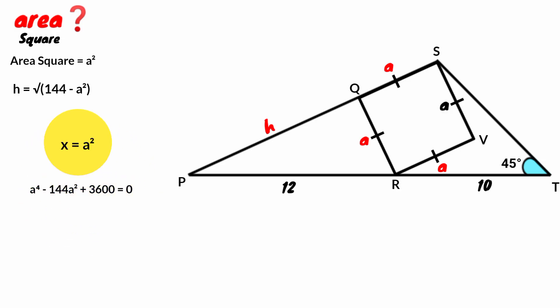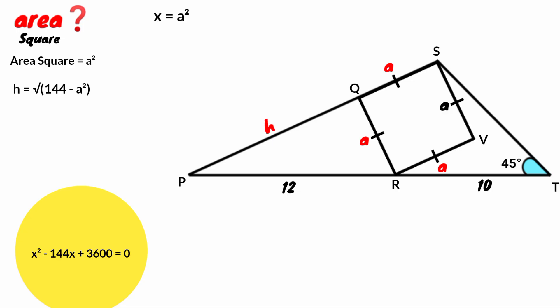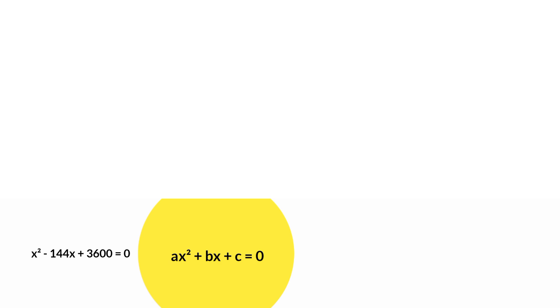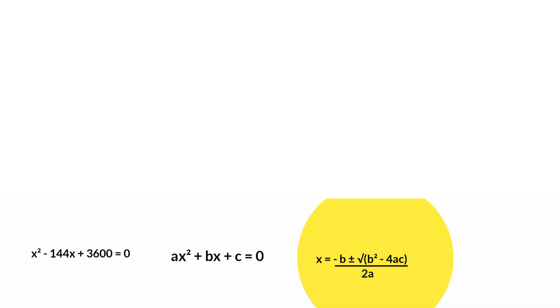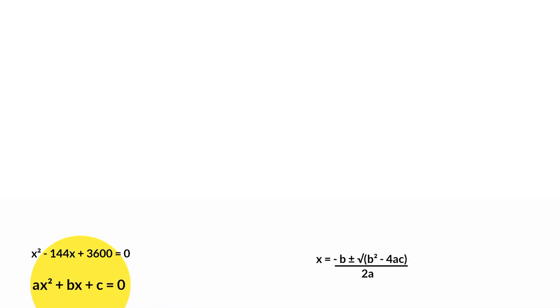Assume x equal to A squared and substitute. So x squared minus 144x plus 3,600 equals 0. By the general formula for any equation in the form ax squared plus bx plus c equals 0: x equals minus b plus or minus square root of b squared minus 4ac, all over 2a. Comparing: a equals 1, b equals minus 144, and c equals 3,600.